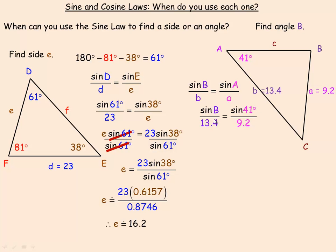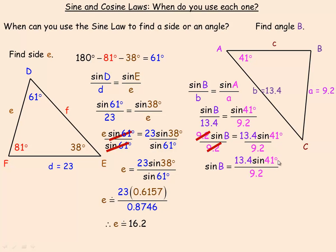Filling in the values: side B is 13.4, angle A is 41, and side A is 9.2. Cross-multiplying: 9.2 times sine B equals 13.4 times sine 41. Isolating sine B by dividing out 9.2, we get sine B equals 13.4 sine 41 over 9.2. Evaluating: sine 41 is 0.6561, multiply by 13.4, then divide by 9.2 — so sine B is approximately 0.9556. Keep four decimal places so your final answer isn't off by a degree or two.